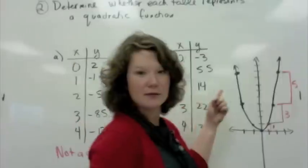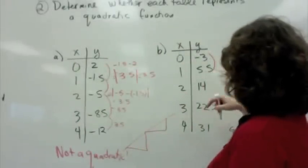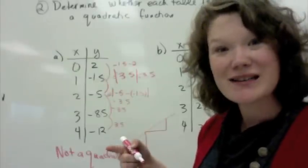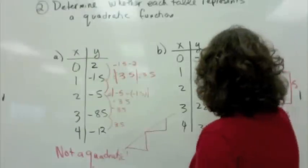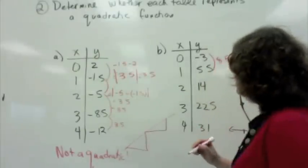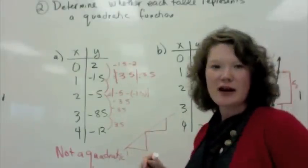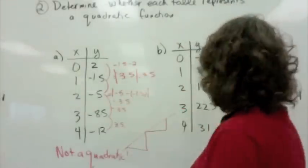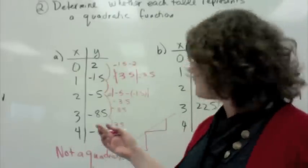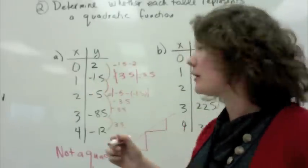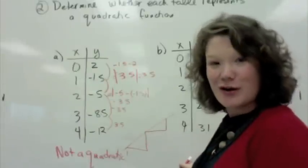What about this one? The distance between 5.5 and negative 3. 5.5 minus negative 3. So, 5.5 plus 3, 8.5. What about 14 minus 5.5? 8.5! What about 22.5 minus 14? 8.5! Guess what? This is also not a quadratic.